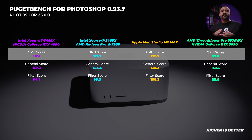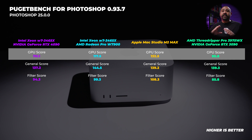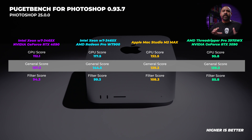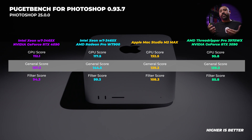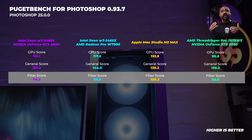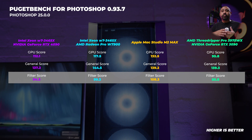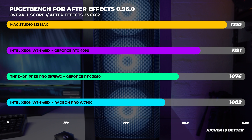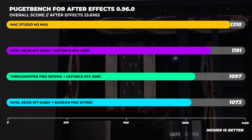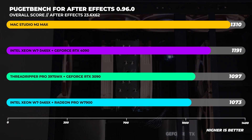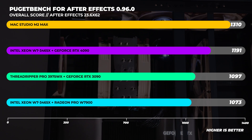Drilling down into specifics: surprisingly, the Mac Studio has the highest GPU score, well above the rest of the configurations. The general score is pretty close across the board, with the Radeon Pro configuration taking the top spot. For the filter score, the Mac Studio is well ahead of the rest of the field with the Threadripper Pro at the bottom. Moving onto Puget Bench for After Effects overall performance, the M2 Max Mac Studio completely decimates the rest of the field.